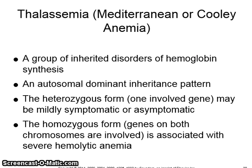Thalassemia, also known as Mediterranean or Cooley's anemia, is a group of inherited disorders of hemoglobin synthesis. It is an autosomal dominant inheritance pattern. The heterozygous form involves one gene and may be mildly symptomatic or asymptomatic. The homozygous form, where genes on both chromosomes are involved, is associated with severe hemolytic anemia.